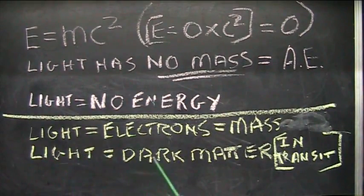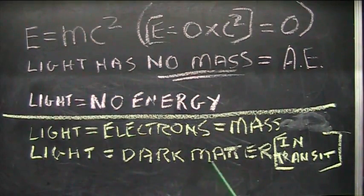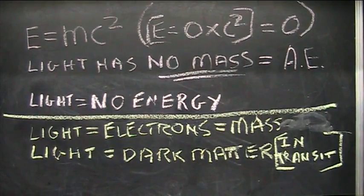When they are in the vacuum of space, which is not really a vacuum, they are all in there. They just don't interact. So light is actually dark matter in transit—dark energy, dark matter.